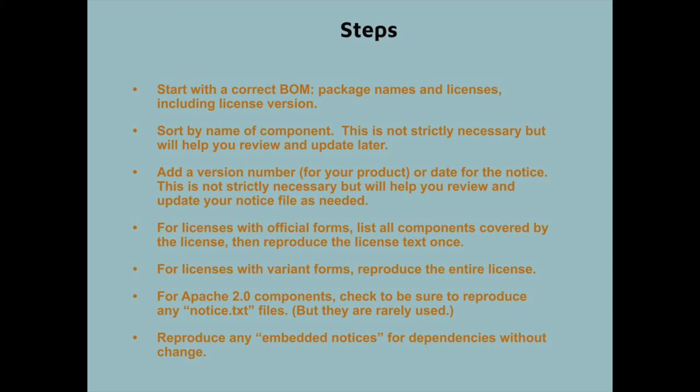For licenses that have variant forms, you have to reproduce each entire license individually because they're not exactly the same — they will have a different copyright notice for the software at the top. So you're going to have a lot more copies of, say, the MIT license, and only one copy of, for instance, the GPL.